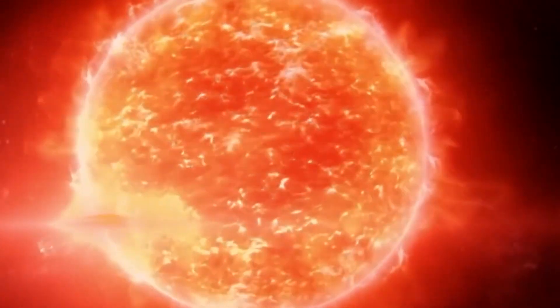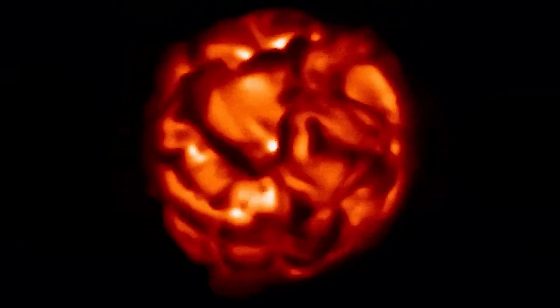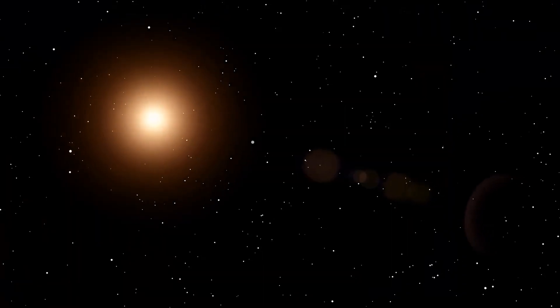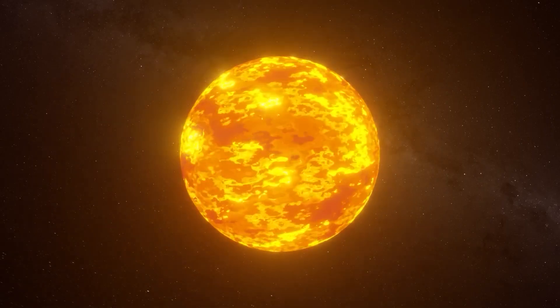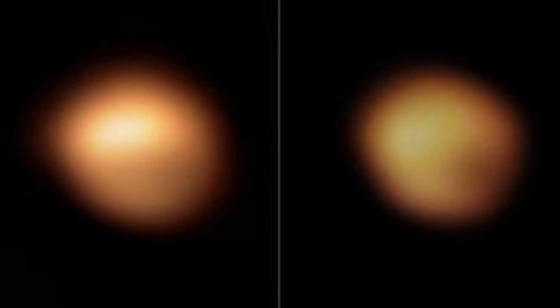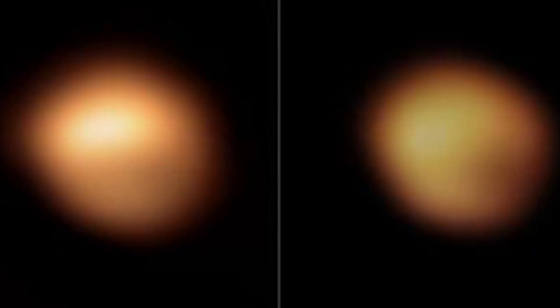In March 2024, the American Association of Variable Star Observers reported another dip in Betelgeuse's brightness. Researchers have been anxiously monitoring this dimming, hoping it might indicate the star is nearing its explosive end. However, this dimming was found to be a direct after-effect of the great dimming event of 2019 and 2020.